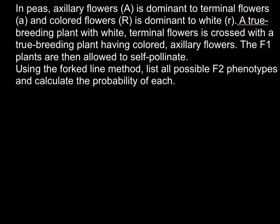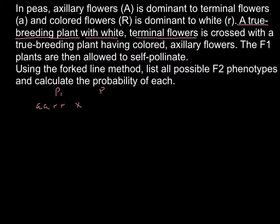We have a true breeding plant for parent one with white terminal flowers. White color is recessive and terminal flowers are also recessive. True breeding means homozygous, so the genotype of the first parent is going to be small a small a and small r small r. Parent two is also true breeding — homozygous — with colored axillary flowers.